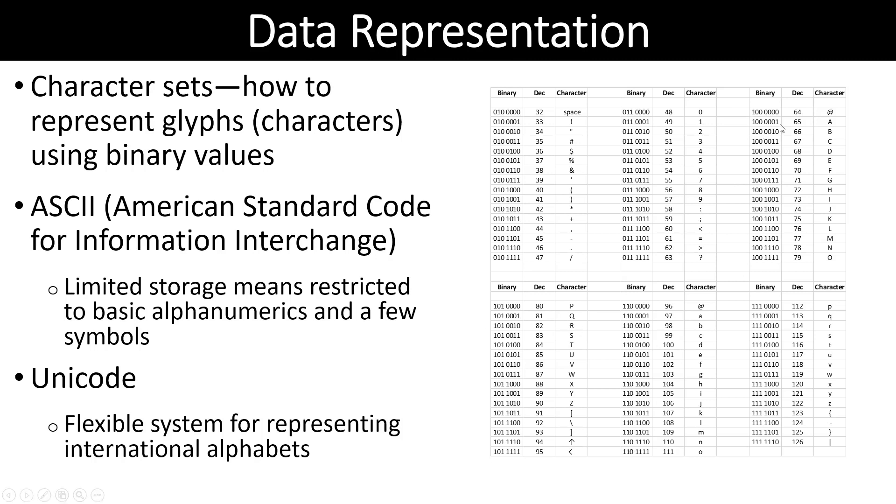For example, if we wanted to find the letter A, it's over here. Its decimal number is 65. And here is the binary representation, 1000001. Then if you look at B, it's the next one up, and so on. So ASCII is used frequently. However, Unicode is a more flexible system that gives us international alphabets and a lot more characters that are possible to be used.